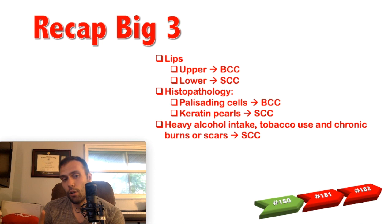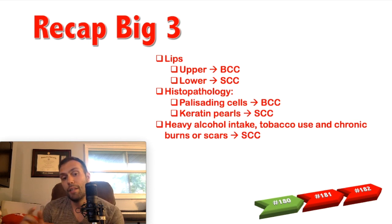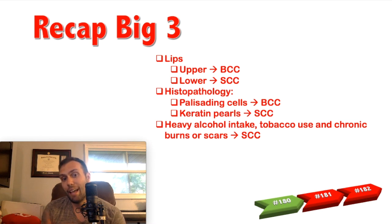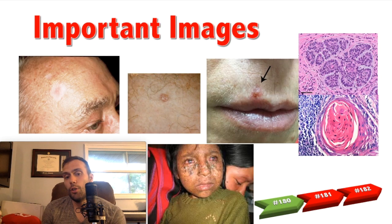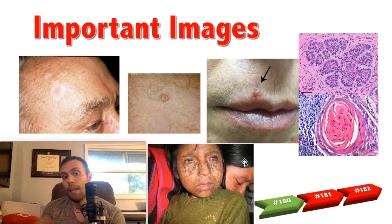The big three things to remember: upper lip is basal cell carcinoma, lower lip is squamous cell carcinoma — particularly high yield. On histopathology, if you see palisading cells, it's basal cell carcinoma; keratin pearls mean squamous cell carcinoma — make sure you can recognize keratin pearls. Risk factors for basal and squamous cell carcinoma are very similar, but squamous cell carcinoma additionally has heavy alcohol intake, tobacco use, chronic burns or scars that are painless, bleeding, and enlarging — especially in the setting of immunosuppression. Know what xeroderma pigmentosum looks like, and remember nucleotide excision repair and thymidine dimers.